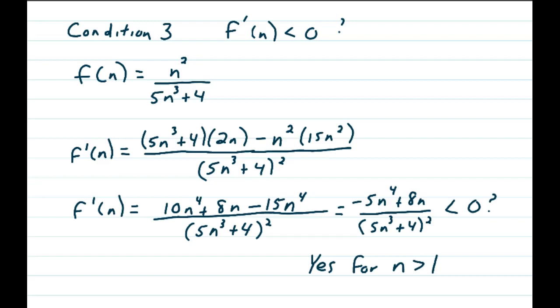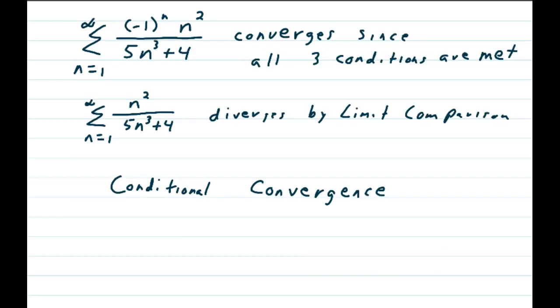Well, the bottom's always positive, so we just have to check the top, and we find out if we use an n greater than 1, that will always be less than 0, and we just need to find some n that will make this true, and it is true.